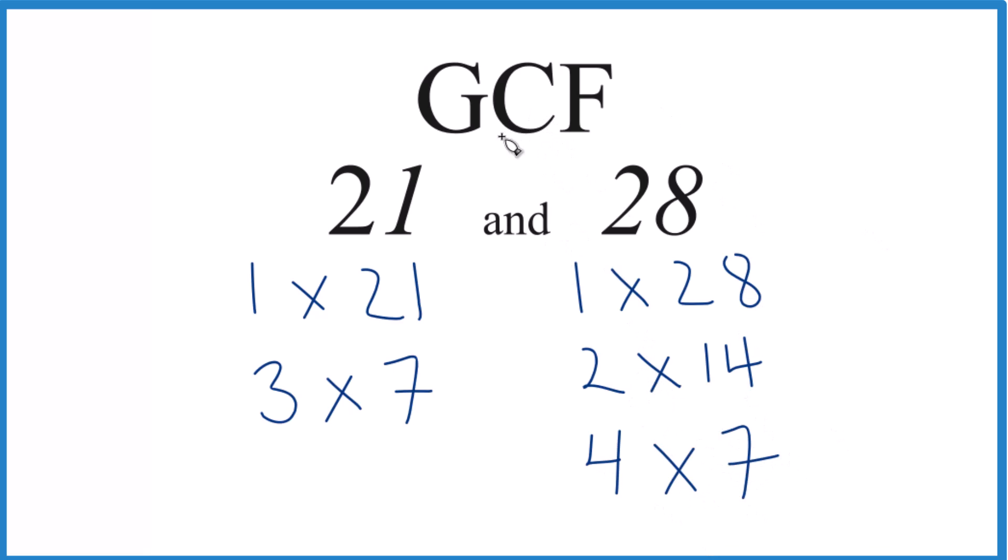So we want to find the greatest common factor. We have our factors. Let's look at the common factors between 21 and 28. 1 goes into 21 and 28 evenly. 3, no. How about 7? Yeah, 7 goes into both 21 and 28. So that's a common factor.